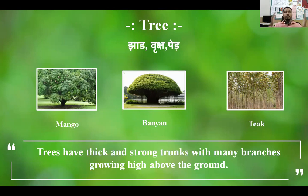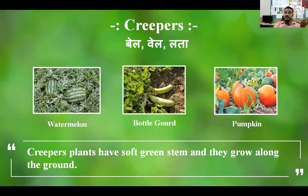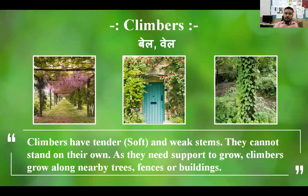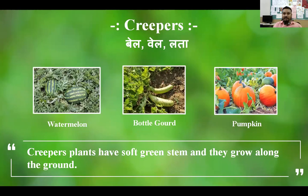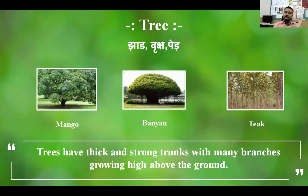Trees have a thick and strong stem, and this stem is called a trunk. Trees have a number of branches that grow high above the ground using this trunk. So the types of plants we have seen are: climbers, creepers, shrubs, water or aquatic plants, and main trees.